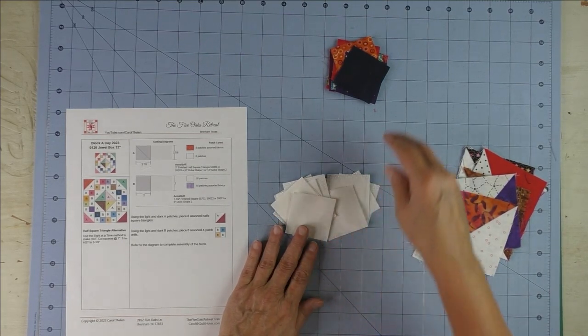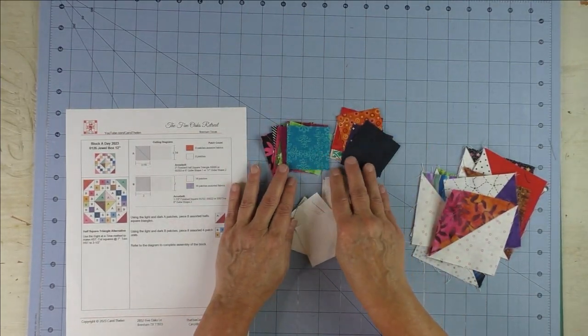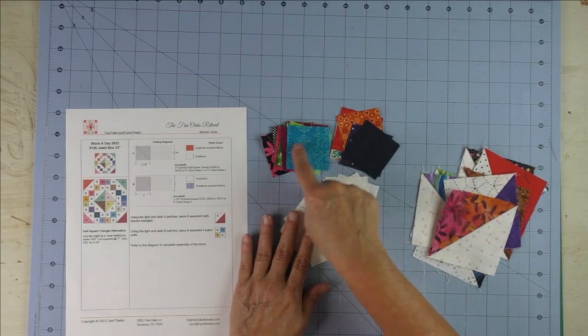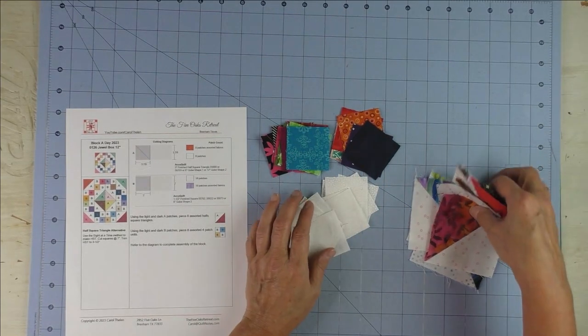These were leftover from the Streak of Lightning quilt. They were two and a half inches and I trimmed them all down to two inches.